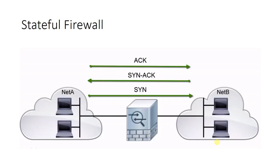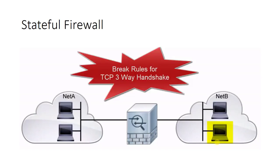During a network attack, the attacker might try to break the rules of the TCP three-way handshake to confuse the system and cause unintended behavior. Stateful firewalls recognize when rules are broken and will drop the offending packet to mitigate the attack. Any violation of the TCP protocol is recognized by the stateful firewall and rejected.